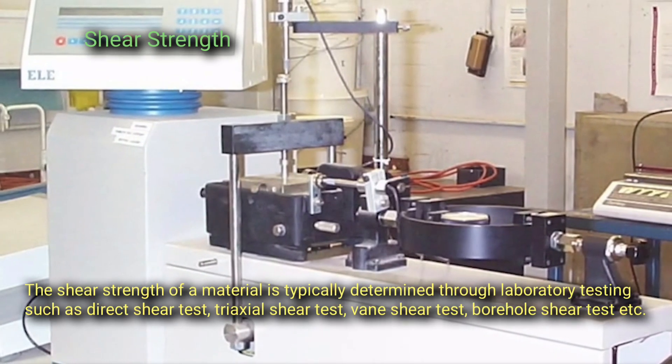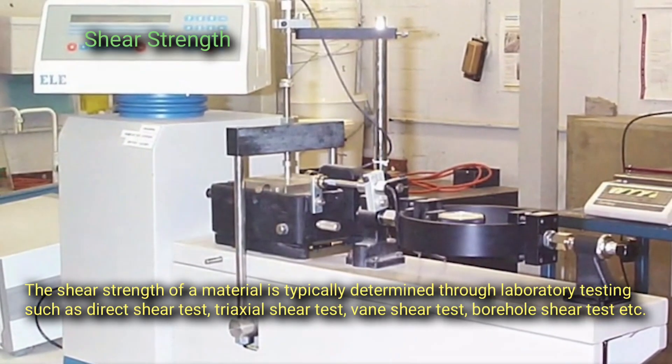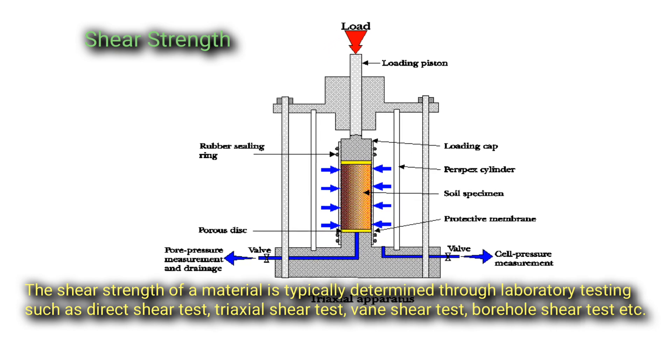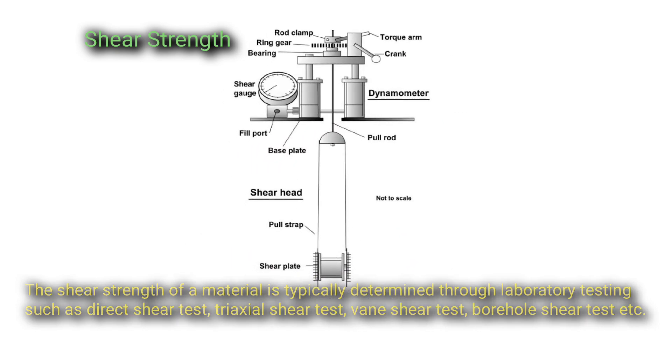The shear strength of a material is typically determined through laboratory testing such as direct shear test, triaxial shear test, vane shear test, borehole shear test, etc.